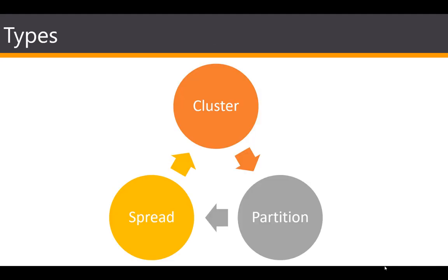There are three basic different kinds of placement groups we can work with within AWS. Placement groups are a logical grouping of EC2 instances. The first type is a cluster placement group, which is a logical grouping of instances within a single availability zone. It can span peered VPCs in the same region. The chief benefit of a cluster placement group, in addition to a 10-gig flow limit, is a non-blocking, non-oversubscribed, fully bi-directional nature of the connectivity.